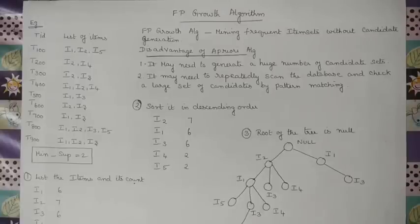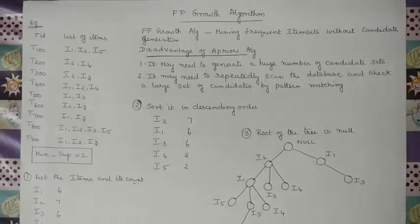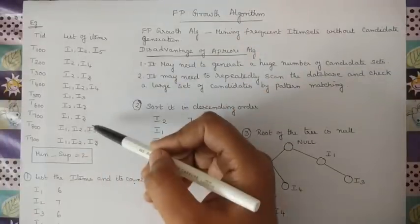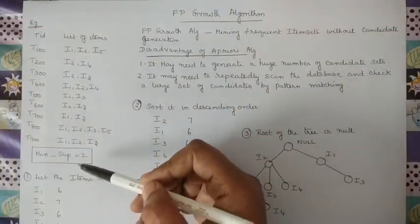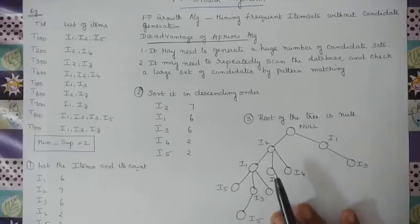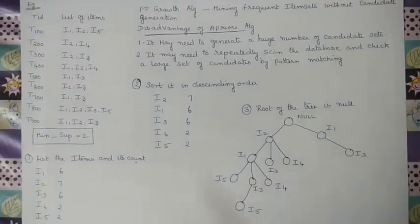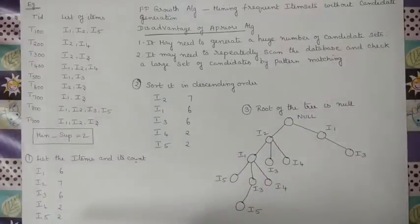Because of all these disadvantages and limitations, we are moving on with the FP growth algorithm. This FP growth algorithm mines the frequent item set without candidate generation. We will see how it works with an example. We have a transactional database and the minimum support is given as 2. The first step, just as in Apriori, is to list the items and find out the counts — that is, in how many transactions each particular item occurs.